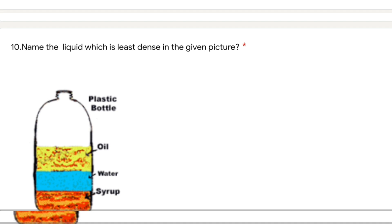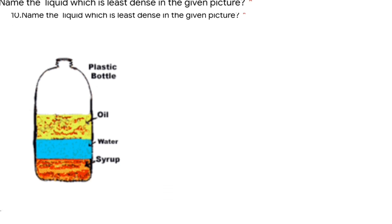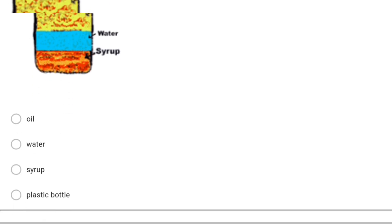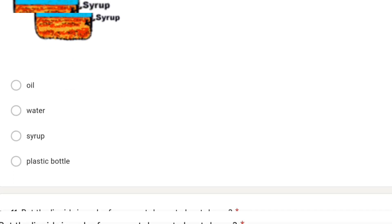Question 10: name the liquid which is least dense in the given picture. The least dense liquid will be on top and the most dense will be at the bottom. So oil will be the least dense and syrup will be the most dense. The correct answer is oil.